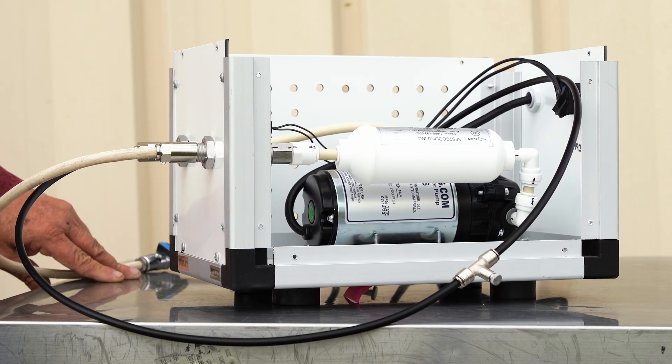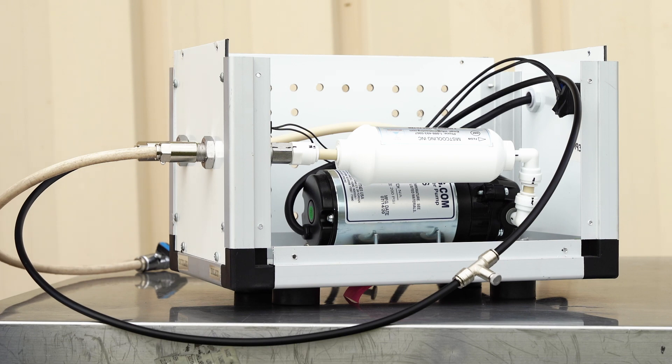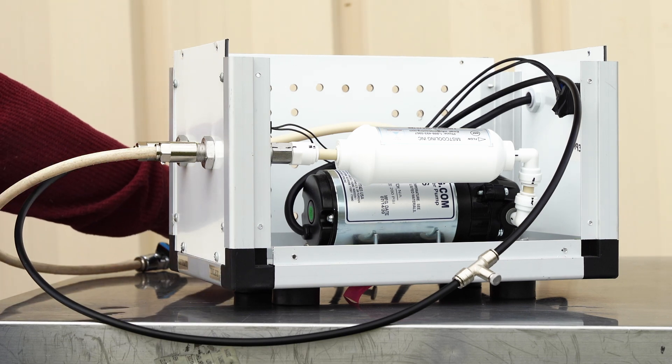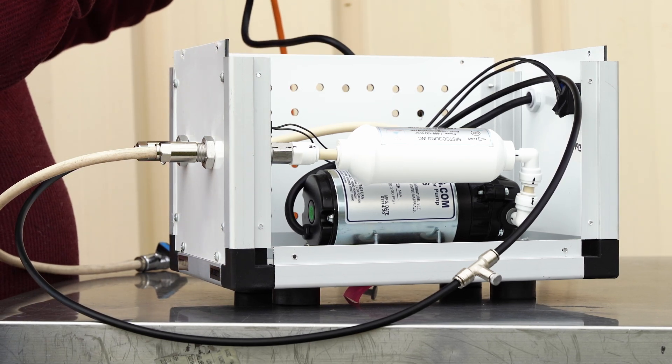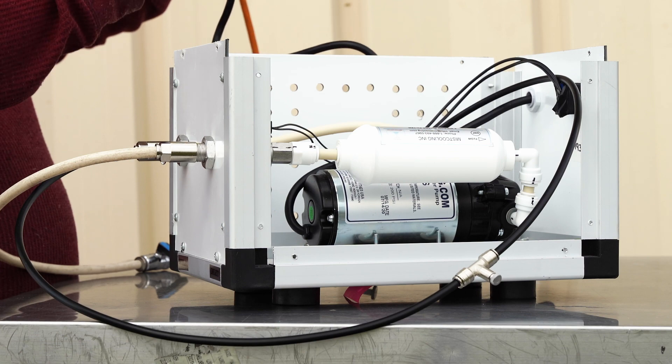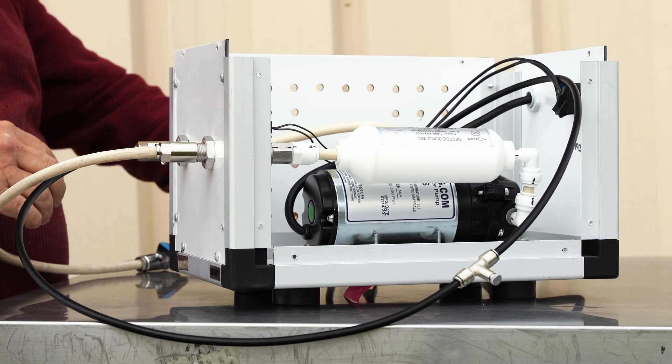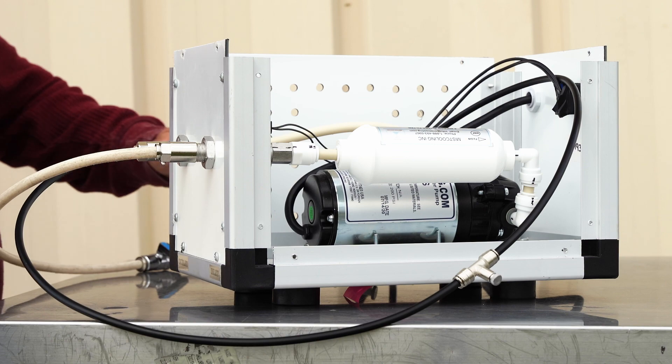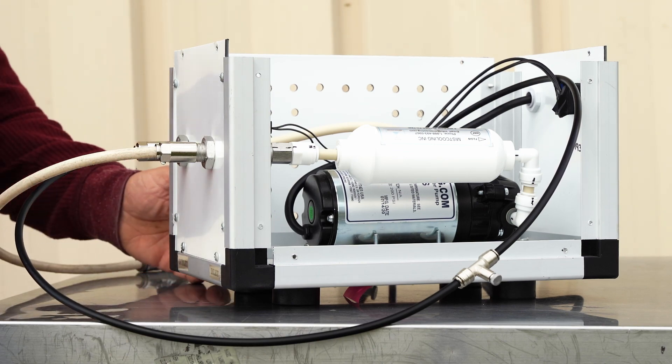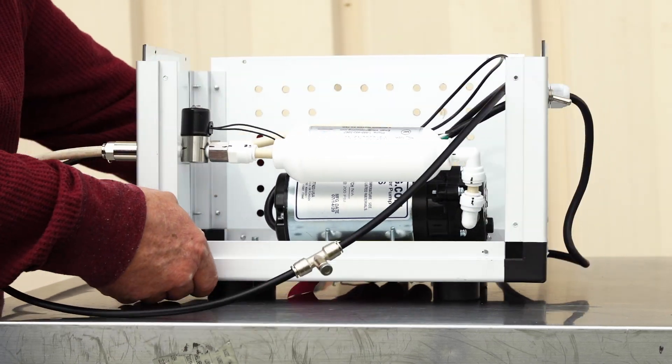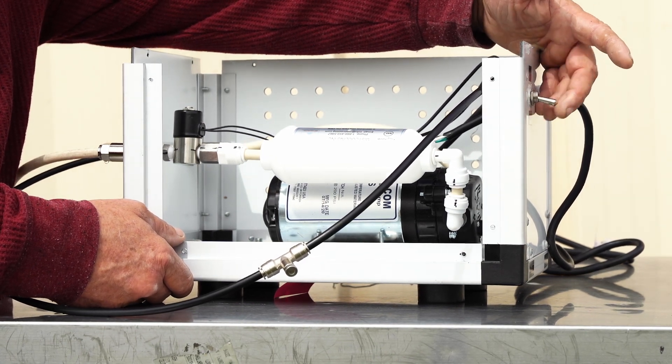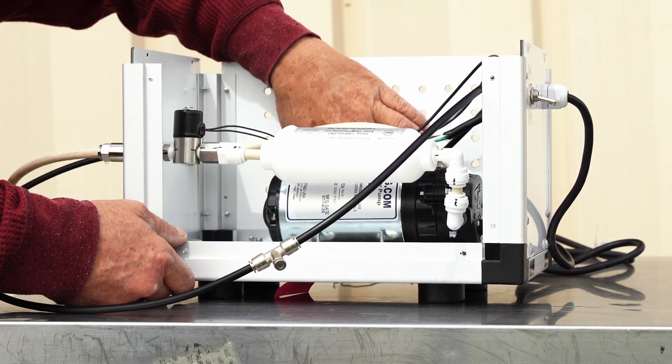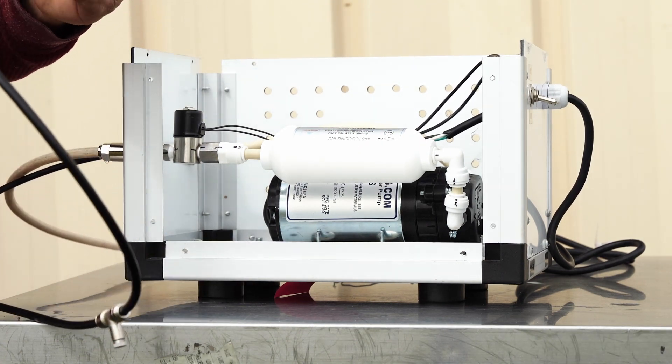Then you want to connect your pump to your receptacle on the wall. We're going to use this extension cord just for demonstration purposes. Plug that in. Then your toggle switch will go up to turn it on, down to turn it off, just the same as a light fixture.